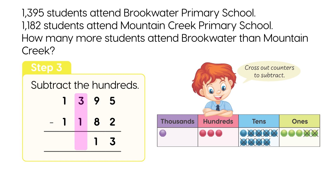Step 3: Subtract the 100's. 3 100's minus 1 100's is 2 100's. Step 4: Subtract the 1,000's. 1,000 minus 1,000 is 0 thousands.